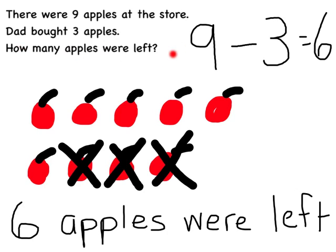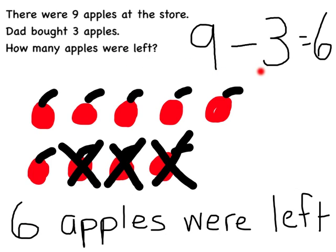Today, we have learned how to read carefully a story problem. We have talked about and practiced showing our thinking — that when we do takeaway, we use X's. And when we answer it, we use a complete sentence. We can look at the question if we're not sure how to spell things. And then we also talked about how to write the equation to match the story problem.